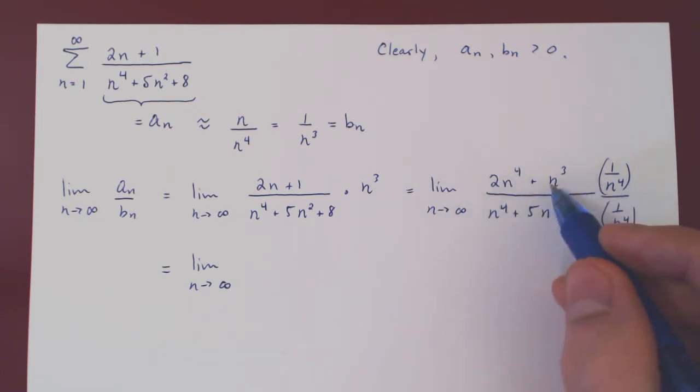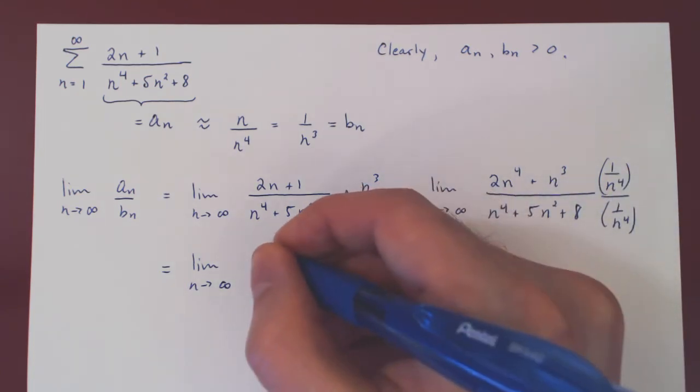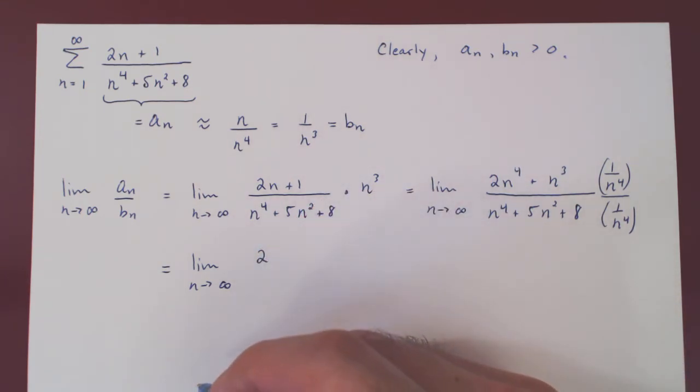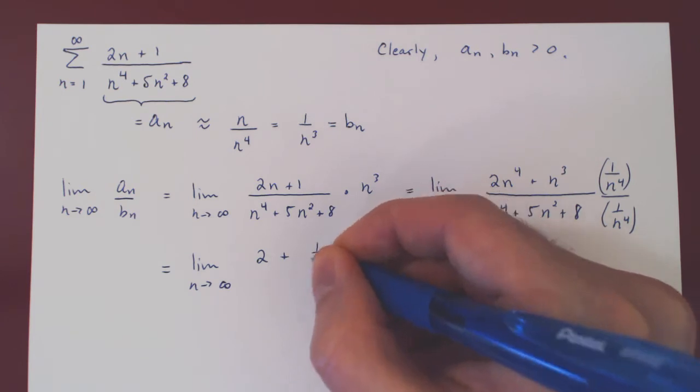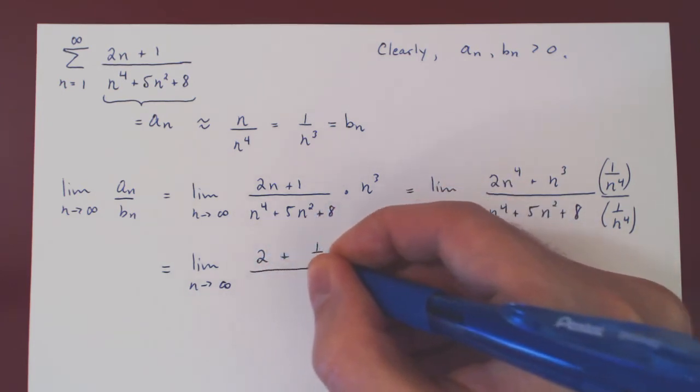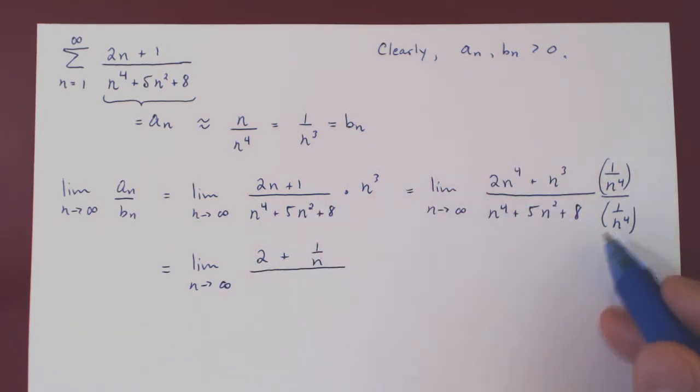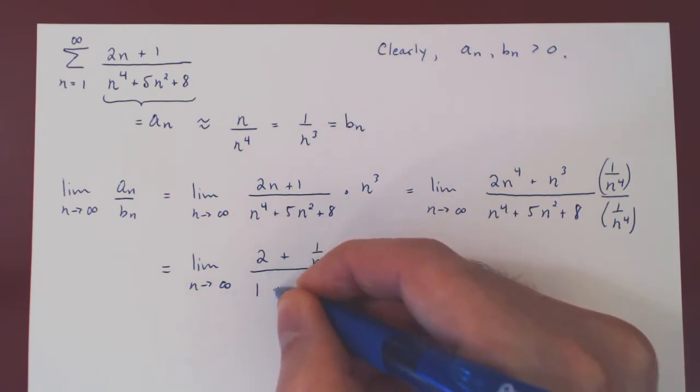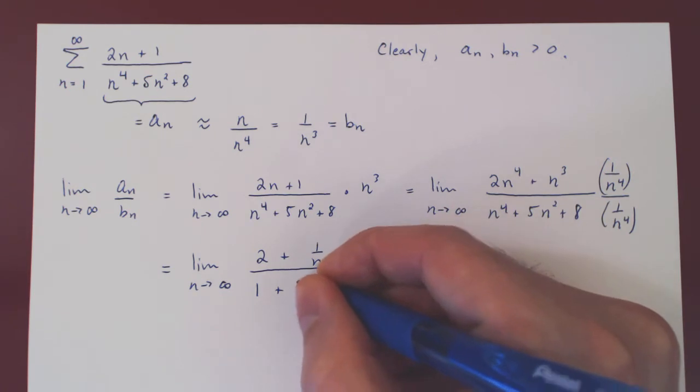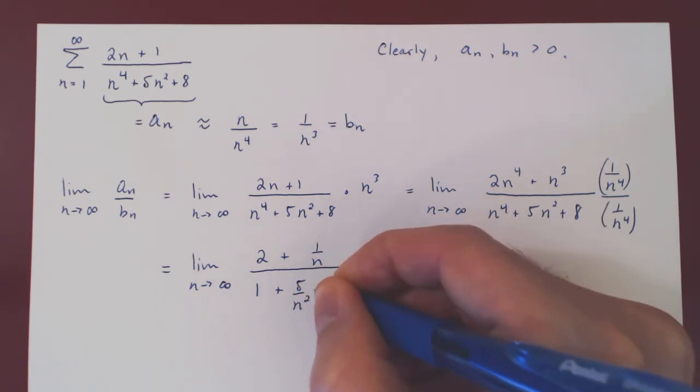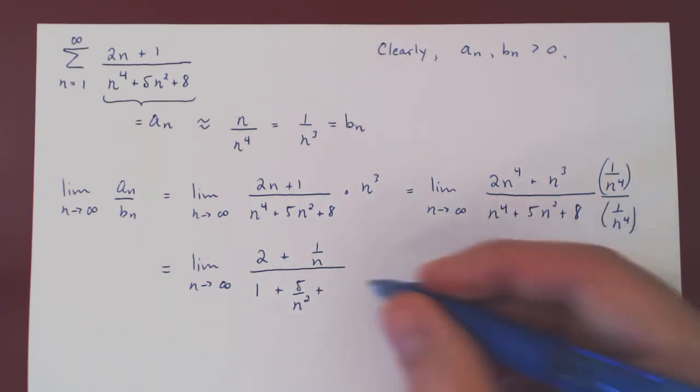So we'll have 2 plus 1 over N on the numerator, all over 1 plus N squared over N to the 4 is 1 over N squared. So 5 over N squared plus 8 over N to the 4.